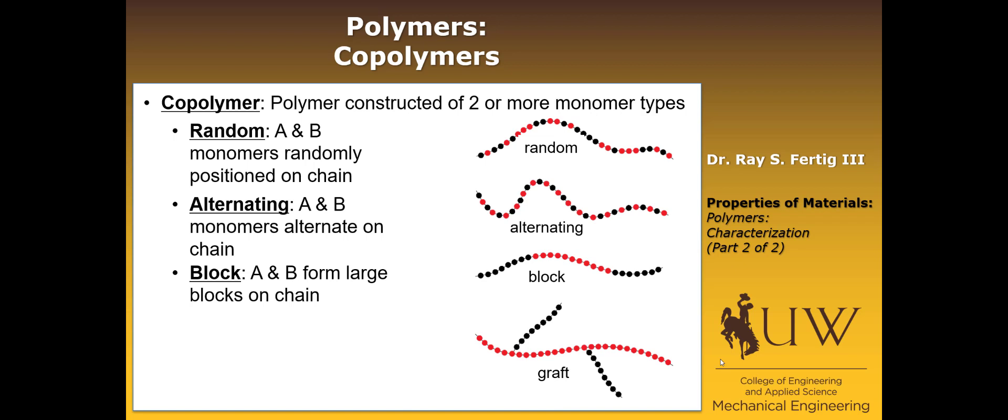And then a third is called a block copolymer. And that's where the A and B are both along the chain, but they typically group together in blocks along that chain. And then finally, the last category of copolymers is a graft copolymer. And that's where we have a backbone that is A, and then we have these branches of B that are grafted onto A. So those are the four main categories of copolymers that you need to be familiar with.